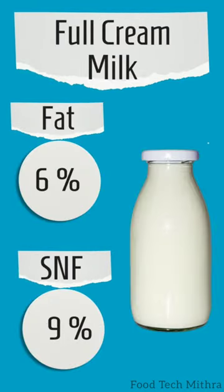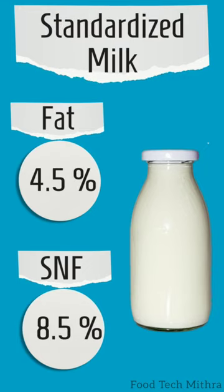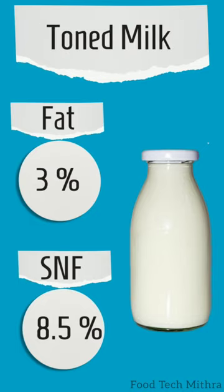Full cream milk contains 6% fat and 9% SNF, and it is creamier and tastier than any other milk available. Standardized milk contains either cow milk, buffalo milk, or a blend of these, standardized with a fat content of 4.5% and 8.5% SNF.